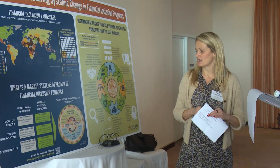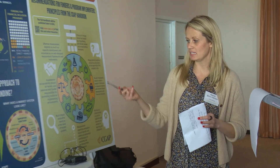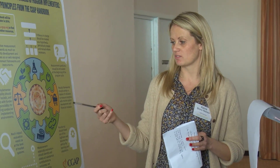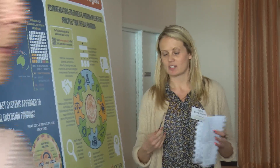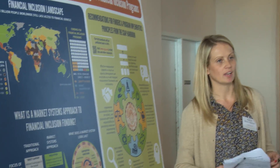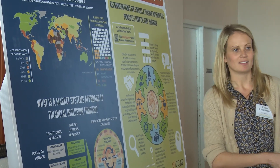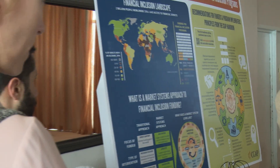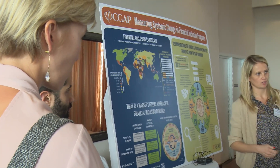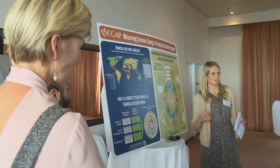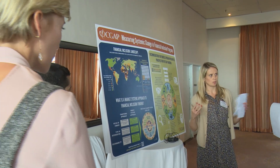Results frameworks should contain a basket of indicators to measure progress with market systems development and financial inclusion. Historically, funders are focusing on counting numbers of accounts, and that's their key success metric - it's all about access, which is quite a hindrance to building market systems. What we are trying to say, and we're coming up with suggestions in this handbook, is that there should be equal focus on indicators that are measuring at the market level. That is not to say that access indicators and usage indicators are not valid, but they should be combined.